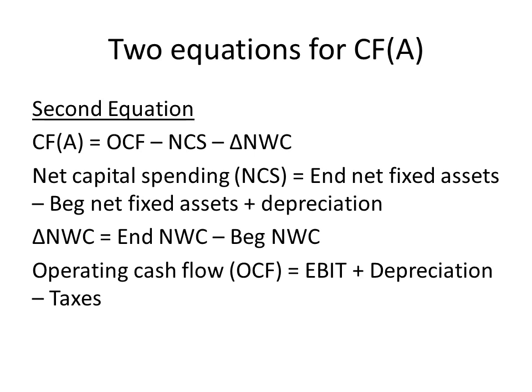The first equation shows where the money goes to. This second equation shows where the money came from — the operations of the firm, the kinds of investments we've been making, along with changes in net working capital. Our second equation is: cash flow from assets equals operating cash flow minus net capital spending minus the change in net working capital. Net capital spending, or NCS, equals ending net fixed assets minus beginning net fixed assets, and we add back depreciation.